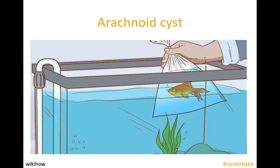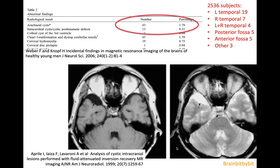I'm going to show images of arachnoid cysts. Arachnoid cysts are very common and we see them often on CT and MRI. They have a prevalence of one to two percent — one study supporting these numbers was from 2006, looking at two and a half thousand healthy males from the army. A little more than 50% of arachnoid cysts occur in the temporal region, which is a typical location.